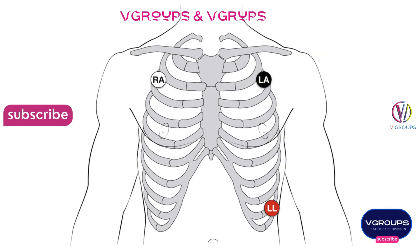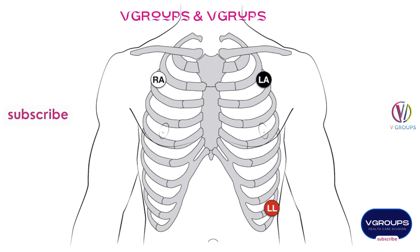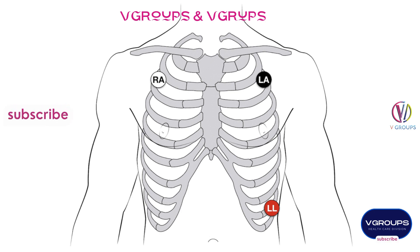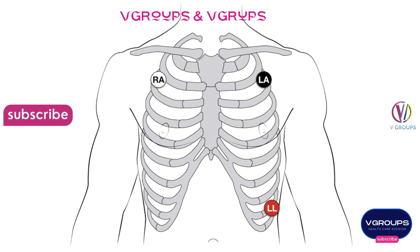The 12-lead ECG requires 10 electrodes: 4 electrodes on all 4 limbs — RA, LL, LA, RL — and 6 electrodes on the precordium, V1 through V6. It monitors 12 leads: V1–V6, leads 1, 2, 3, and AVR, AVL, AVF.